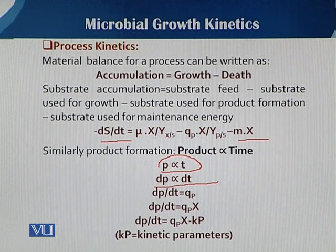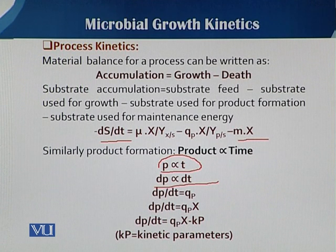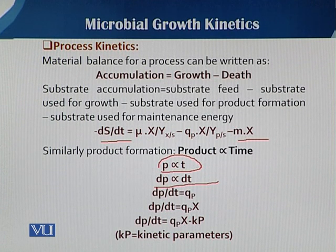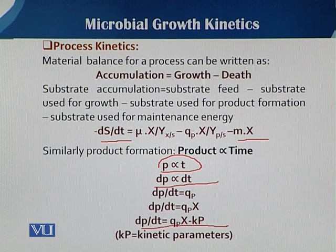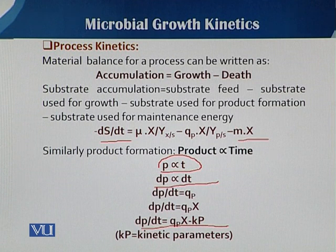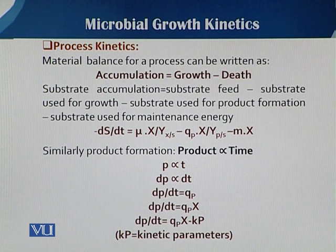If the product is associated with the biomass — meaning our product is directly linked with the biomass concentration, as mostly happens in batch culture fermentation conditions — then we can say that dp/dt is equal to qp times x. As the biomass increases, the product increases. This equation can also be written as dp/dt equals qp times x minus kp, where kp represents different kinetic parameters. So the equation becomes dp/dt equals kp times qp times x.